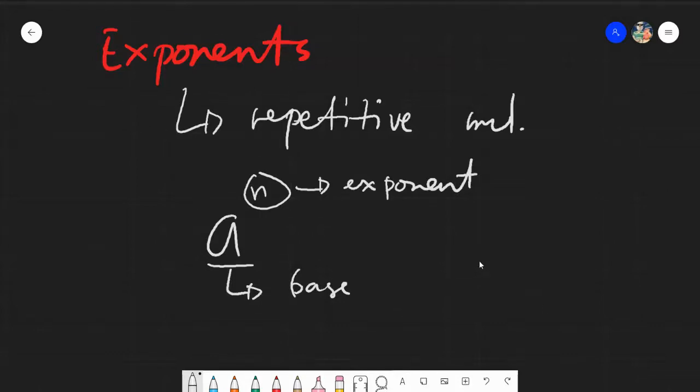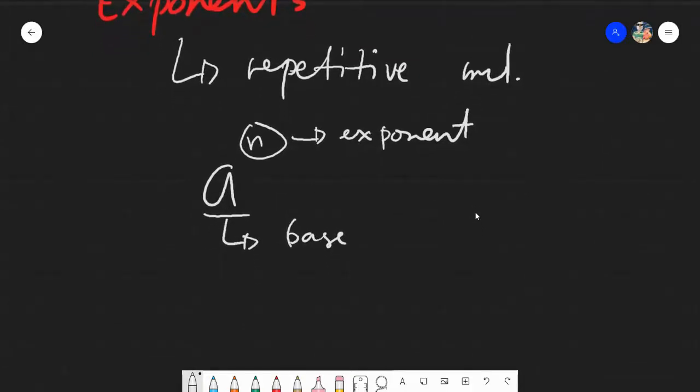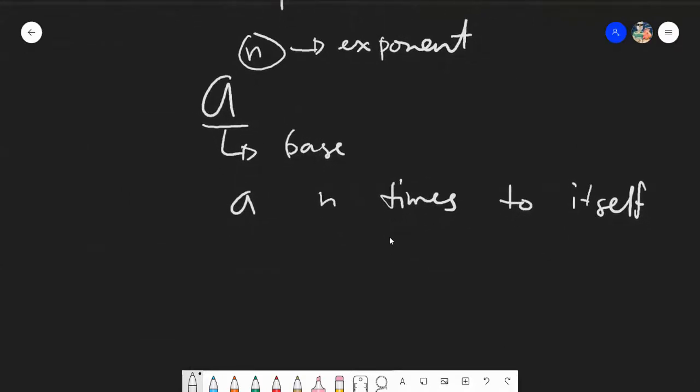So now let's go to the operation itself. It's said that it's repetitive multiplication. It just simply says that if I have my exponent, I will multiply my base n times. Again, I will multiply my a n times to itself.